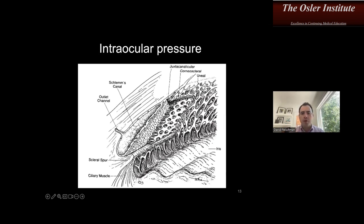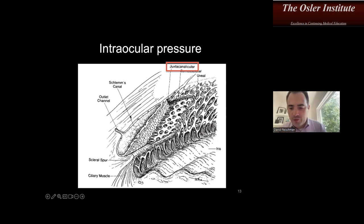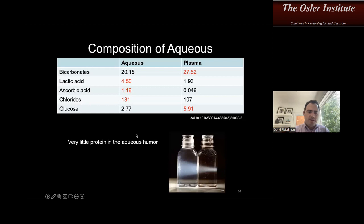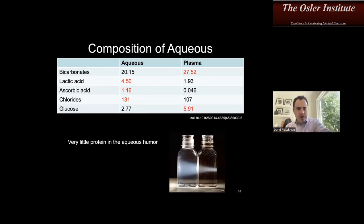What is the site of maximal resistance to aqueous outflow? This is a high-yield point. The juxtacanalicular region — the juxtacanalicular meshwork is the part responsible for most of the resistance. You have the uveal-scleral meshwork, the corneoscleral meshwork, then the juxtacanalicular meshwork abutting the inner wall of Schlemm's canal, and then outlet channels going into aqueous veins, episcleral veins, and the superior ophthalmic vein.